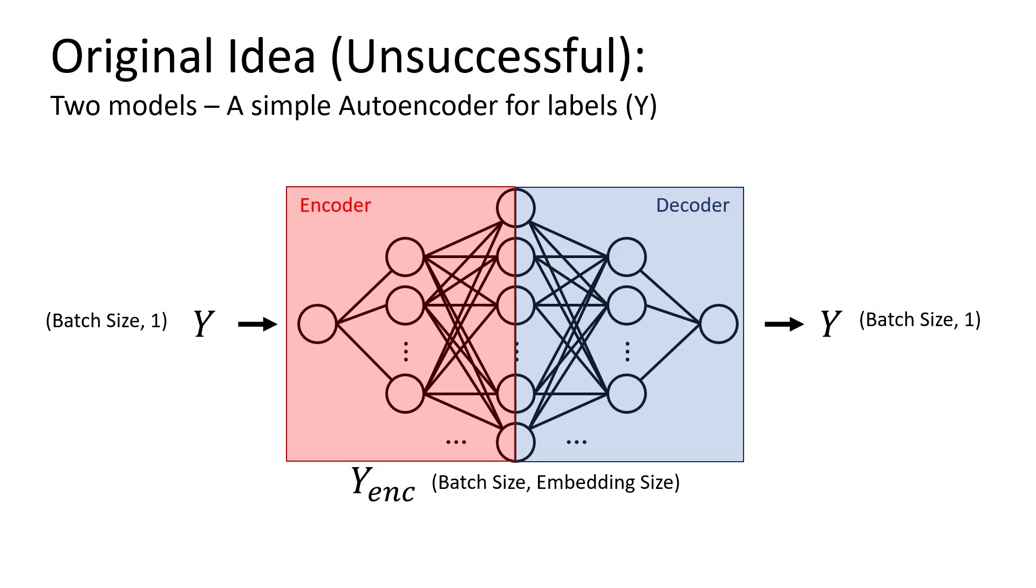My original idea was that a softmax wouldn't be appropriate for a very large multi-class problem, and I wanted to try to do something a little creative and encode the labels for the protein classes using an autoencoder, and then using those encodings as my loss metric and then finally decoding upon inference.